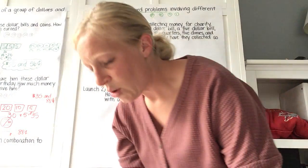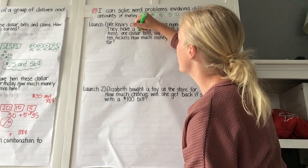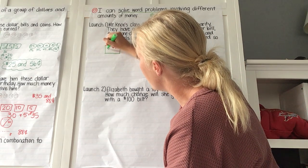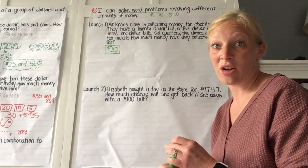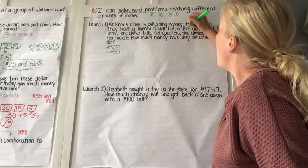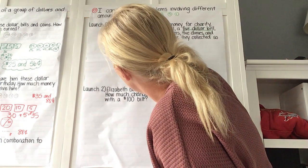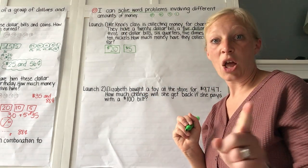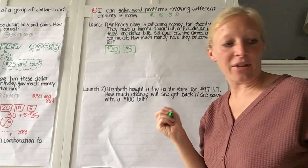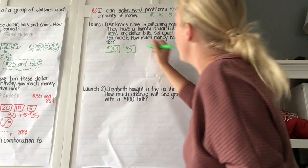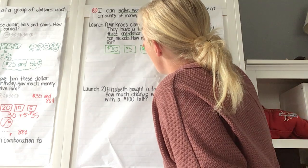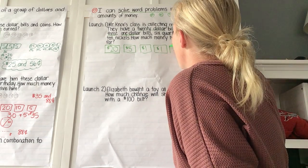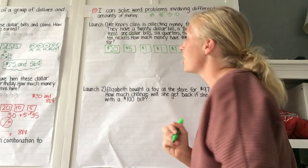What did you hear? A $20 bill. Just like on the last one, I really like to draw out my coins and my dollars — it just helps me. What else? A $5 bill. Then what do we have? Three $1 bills. What will that look like? Draw those rectangles on your paper. There's one $1 bill, two $1 bills, and one more to make three $1 bills.